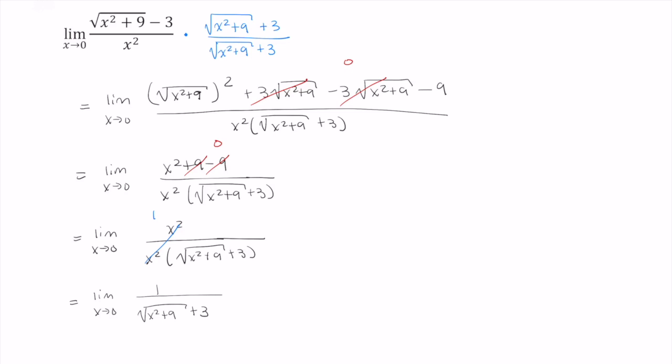At this point, we don't run into any problems. 0 does lie in the domain of this function. So we can apply the direct substitution property. And this gives us 1 divided by the square root of 0 squared plus 9 plus 3, which is just 1 over root 9 plus 3.